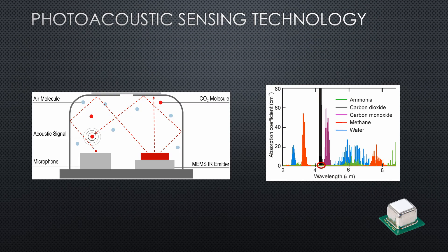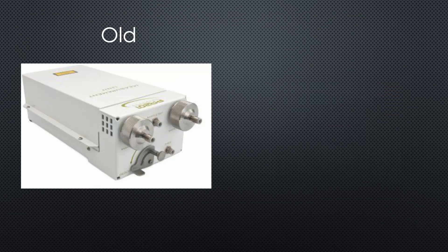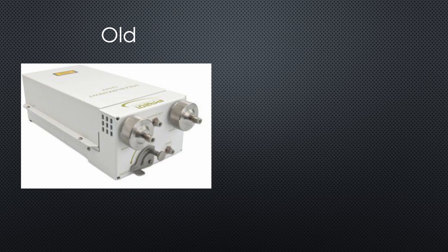As in the NDIR sensors, an IR emitter emits light at a wavelength absorbed by the CO2 molecules. When molecules absorb energy, they increase their movement and therefore increase the pressure inside the sensor's nearly closed room.